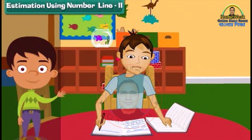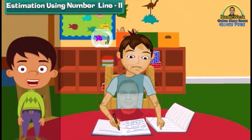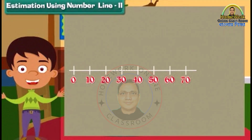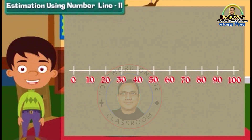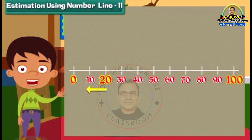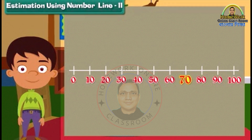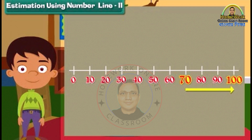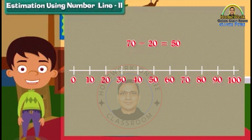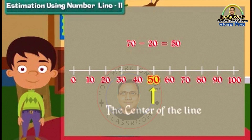Let us now consider a bigger number line from 0 to 100. Can you guess the position of number 20 on this line? It will be near 0. What about number 70? Number 70 will be near 100. Subtracting 20 from 70, we get 50, and the position of 50 will be the center of the line.